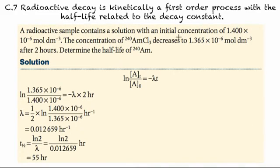So a radioactive sample contains a solution with an initial concentration of 1.400 × 10⁻⁴ mol dm⁻³. The concentration of americium chloride decreases to 1.365 × 10⁻⁴ mol dm⁻³ after two hours. And they want us to determine the half-life. So what we'll do is we just look back at our formula options, and we try and think, okay, what do we have? We have the time, we have the two concentrations, and they want us to determine the half-life. So our first step then is to find the decay constant. So what we do is we use this formula first, we plug in our values, we solve for our decay constant.